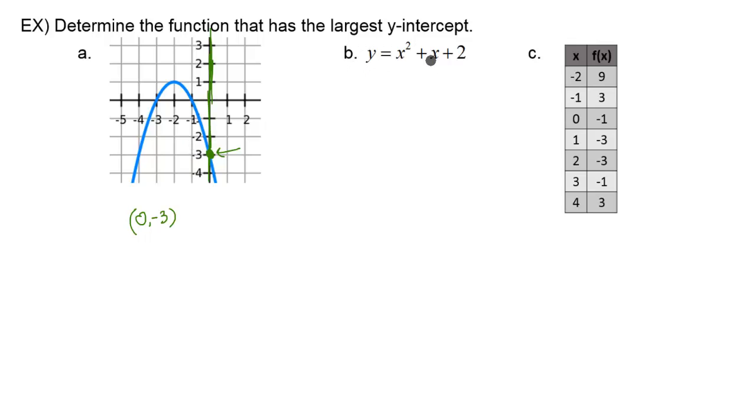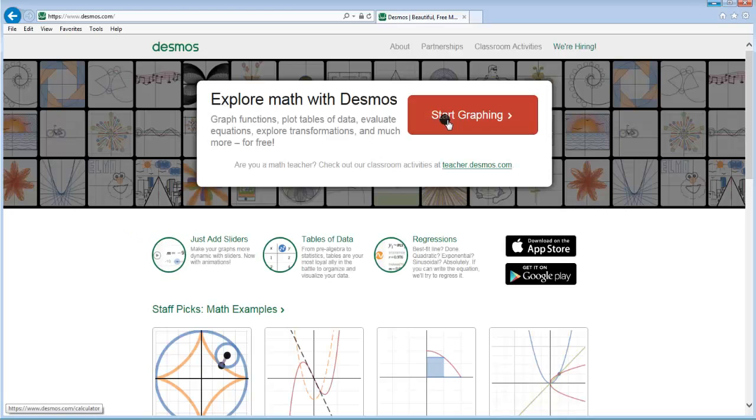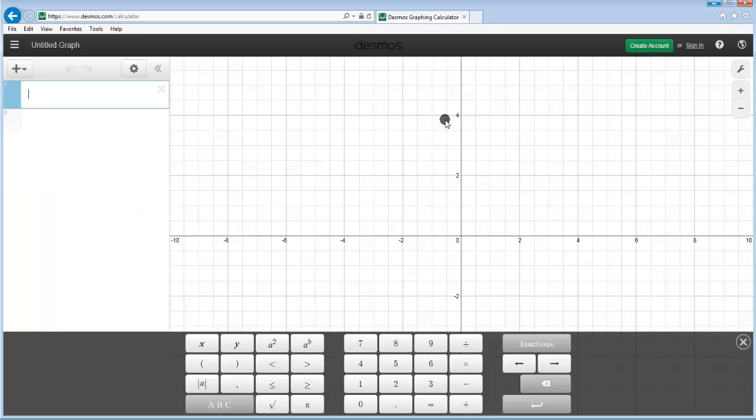Now B, we're looking for the y-intercept again, but we're given an equation. So I like to look at the graphs in these cases, so I'm going to use Desmos.com to graph it. And now I'm going to plug in y equals x squared plus x plus 2, hit enter.